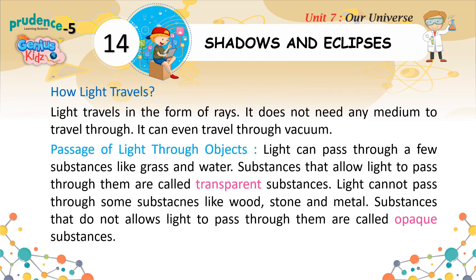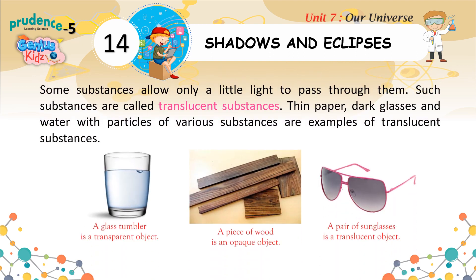Light can pass through a few substances like glass and water. Substances that allow light to pass through them are called transparent substances. Light cannot pass through some substances like wood, stone, and metal. Substances that do not allow light to pass through them are called opaque substances.